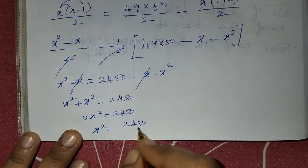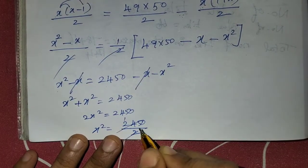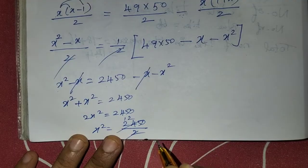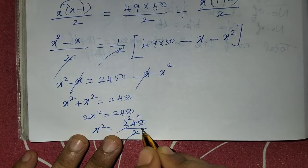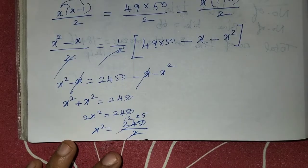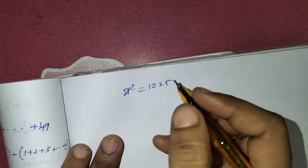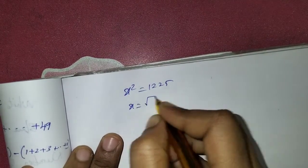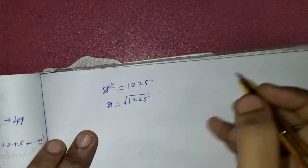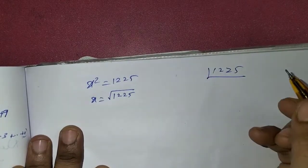After cancellation, we get x squared plus x squared equals 2450, so 2x squared equals 2450, giving x squared equals 1225.